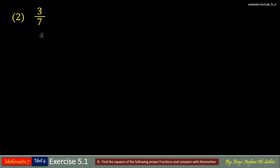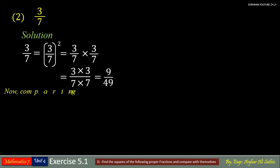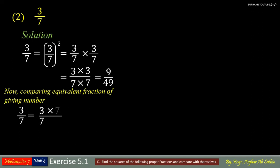Problem number 2: 3 upon 7. First of all we have to find the square of this proper fraction. The square of 3 upon 7 is 9 upon 49. Now if we compare this equivalent fraction with the given number, we will get the same number 3 upon 7.